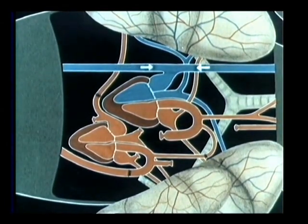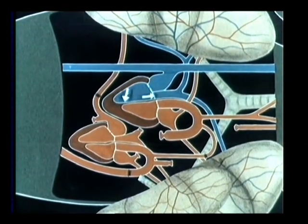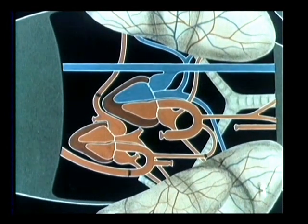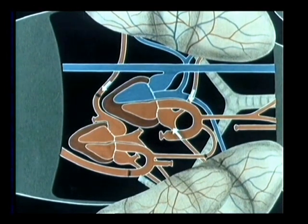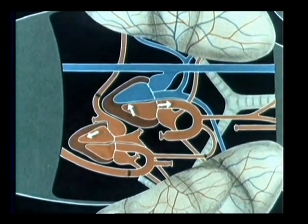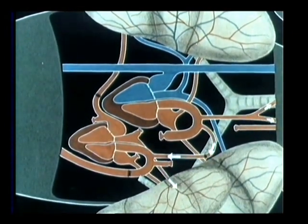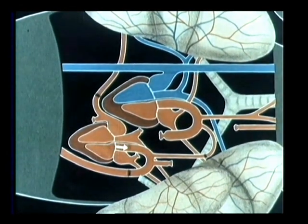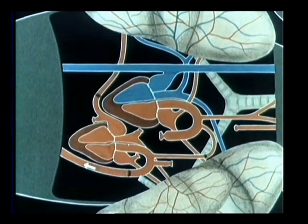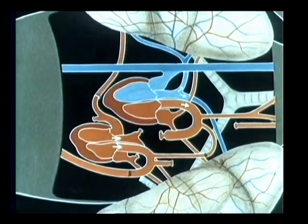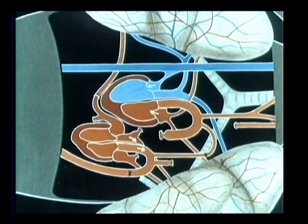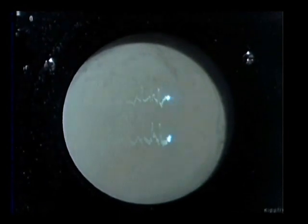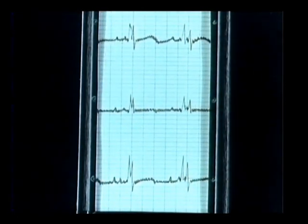The movements demonstrate the new blood flow relationships. It is visible that the transplanted heart receives only arterial blood. The EKG shows the electrical activity of the heart rate.